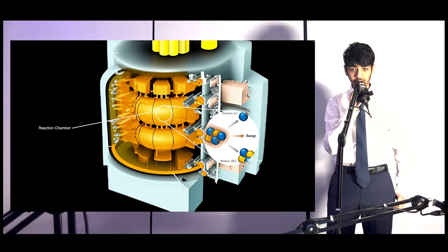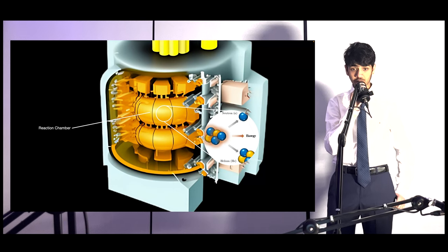Each reactor within the Revolution harnesses a deuterium-tritium fusion reaction, which produces a substantial amount of energy per reaction, approximately 15 trillion joules. To initiate fusion, the plasma fuel mixture comprising deuterium and tritium ions must reach temperatures in the millions of degrees Celsius.